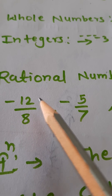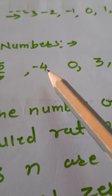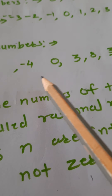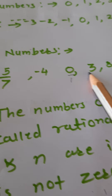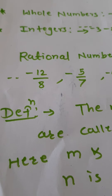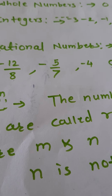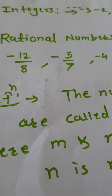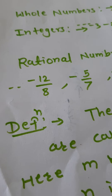Here are some examples of rational numbers: negative 12 upon 8, negative 5 upon 7, negative 4, 0, 3, 8, 32 upon 3, 67 upon 5. Here, you can say the denominator is not shown, but whenever denominator is not there, 1 is always there. So, 1 is the denominator of each and every whole number. The numbers which we can write in the form of numerator and denominator are called rational numbers, with the important condition that the denominator should never be 0.